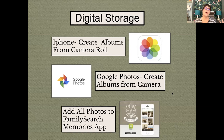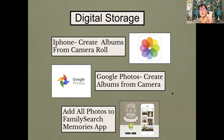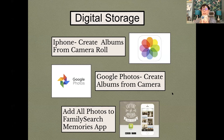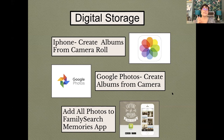Now let's talk about digital storage. Where do you want to keep your photos? I keep my photos on my phone. If you have an iPhone, you have your camera roll, but it also stores in the cloud — so your pictures are in two places. Same with Google Photos. When I take a picture on my phone and then add it to FamilySearch, it's stored in three places: on my phone, in the cloud, and on FamilySearch.